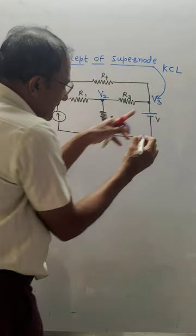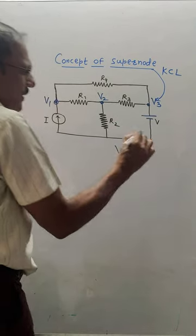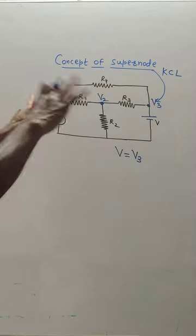So this voltage source V is directly connected at V3. The equation at the super node is V equals V3. For the other nodes, you can apply KCL.